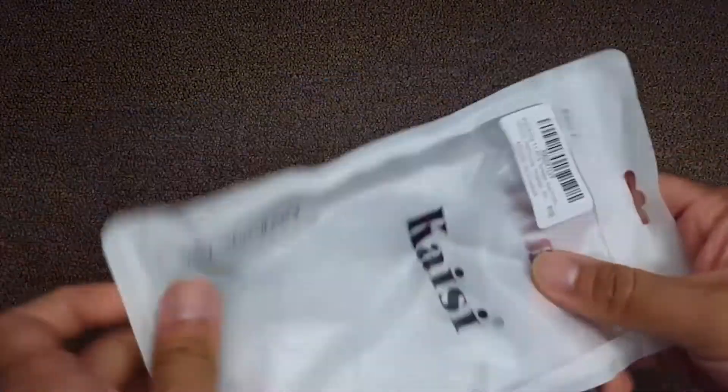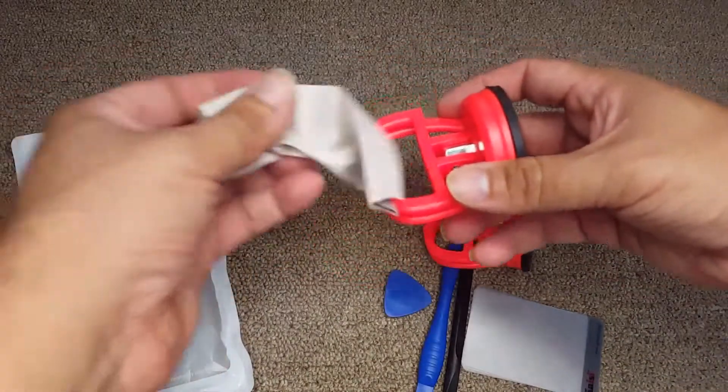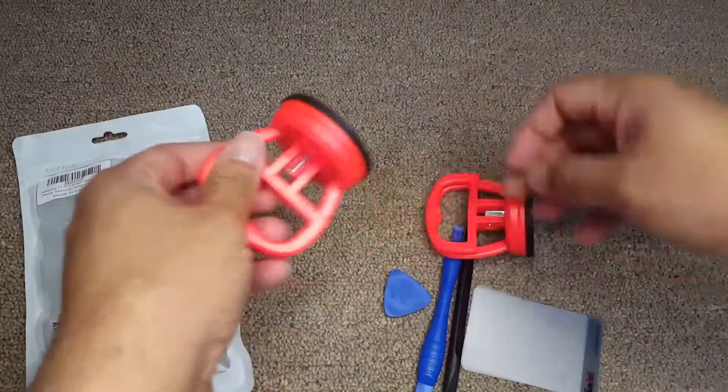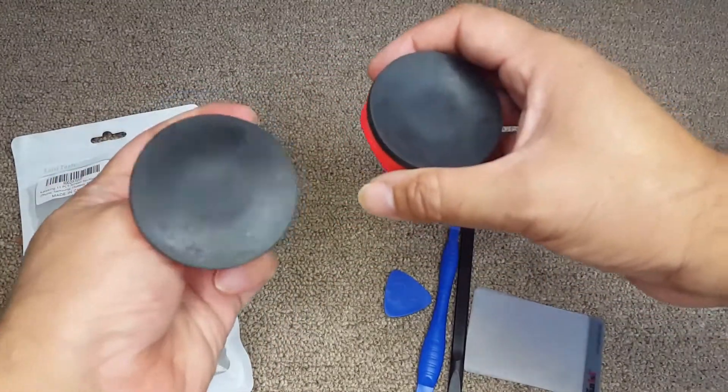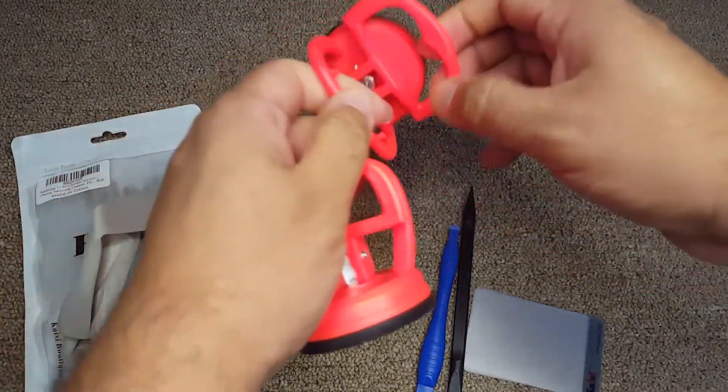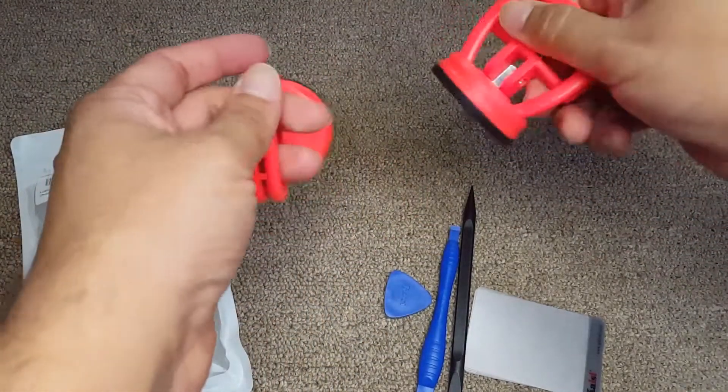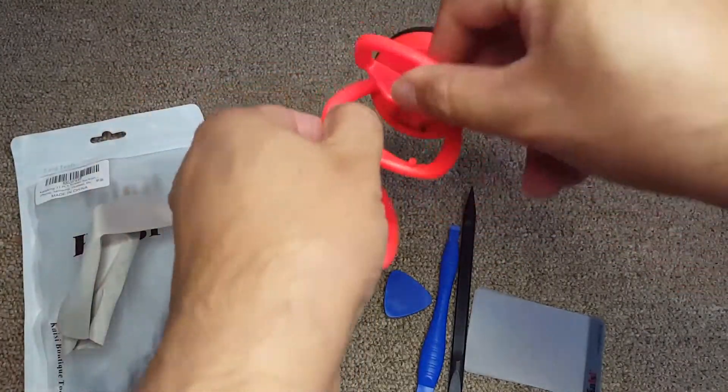Two suction cups which can be used to pull up the screen, one microfiber cloth. These are the two suction cups with easy handle that you can put on top of the screen, and then it will suck it up and then we can pull it up.